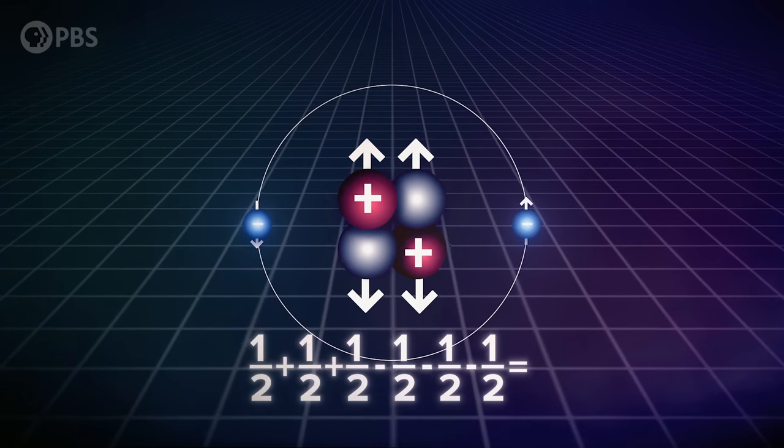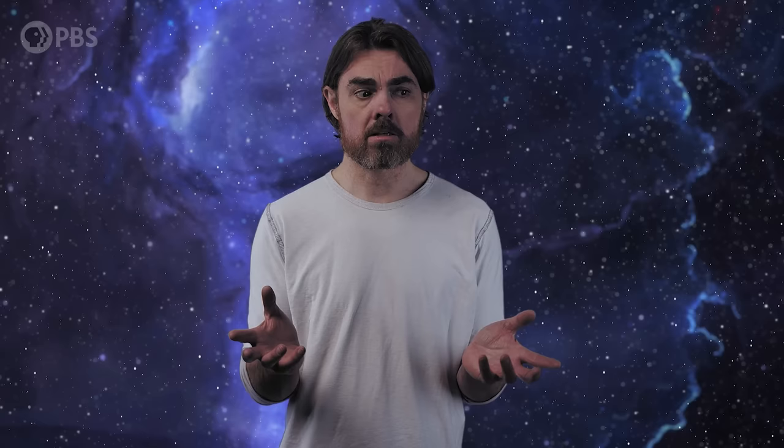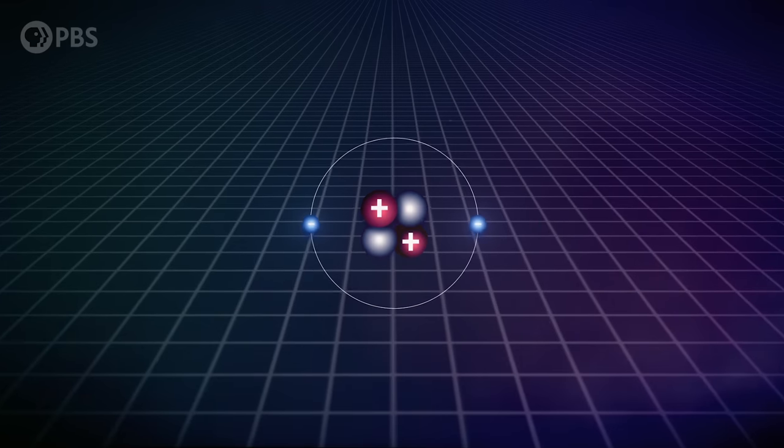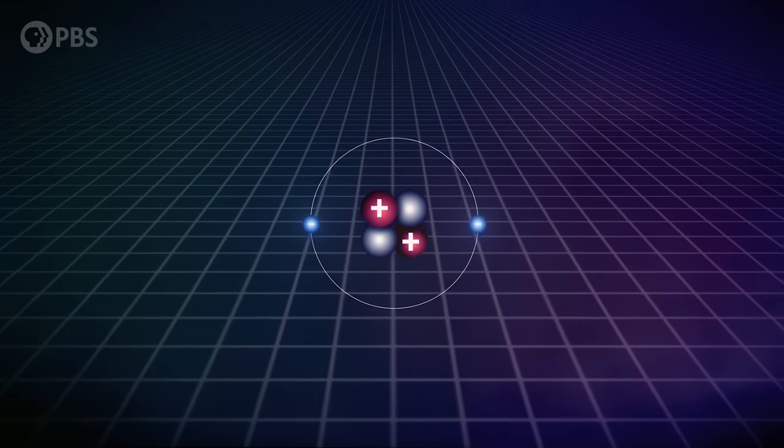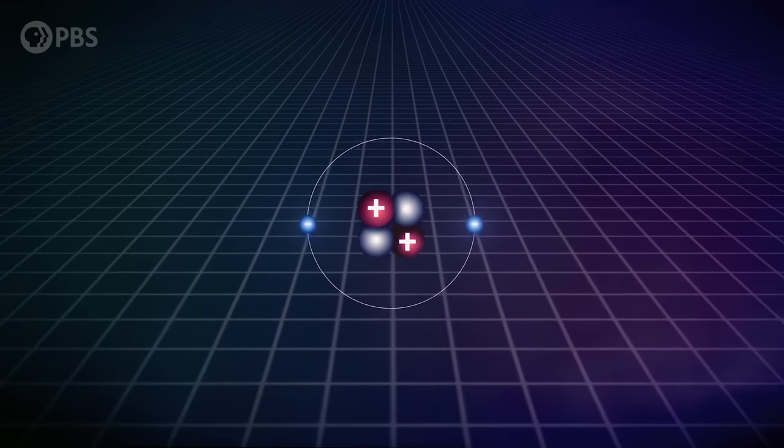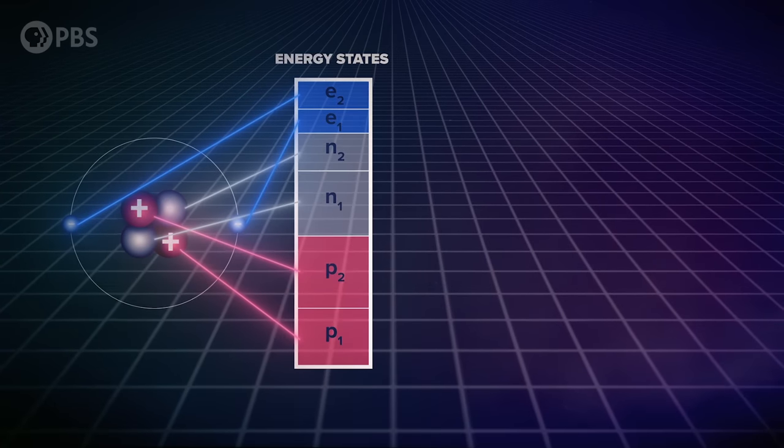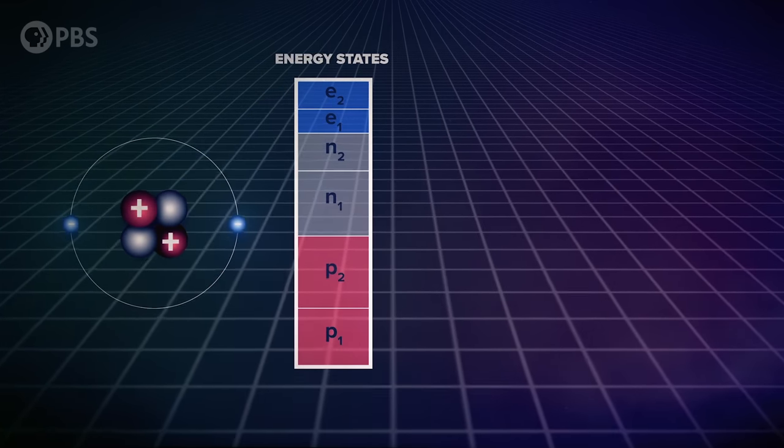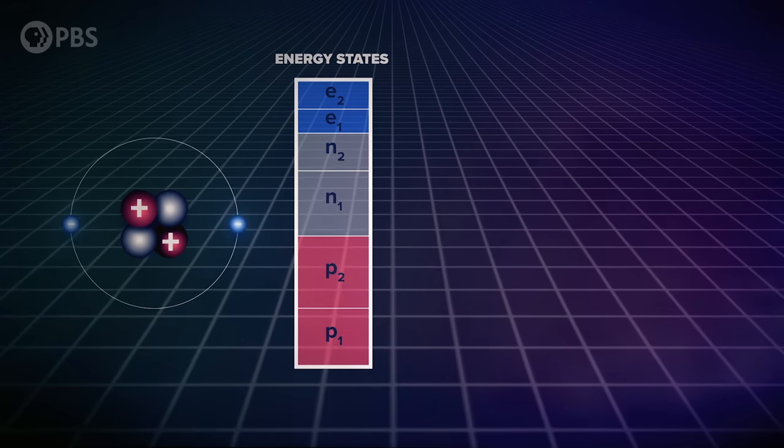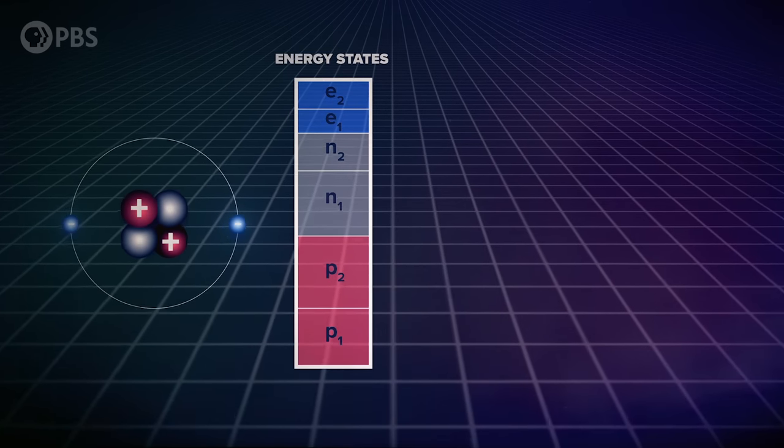which gives the overall atom a spin of zero. That's an integer, therefore helium-4 must be a boson. Its component particles remain fermions and behave as fermions with respect to each other within the atom. They have different internal energy states, but the entire helium-4 atom acts like a boson with respect to its neighboring helium-4 atoms.